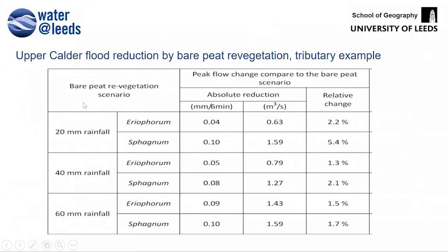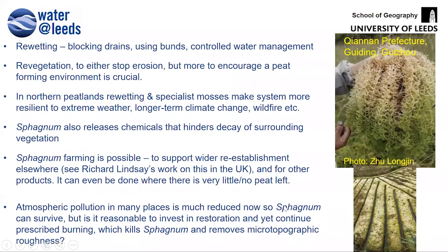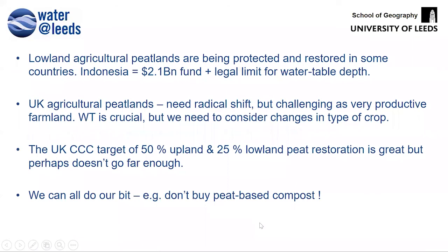We model the effect of dense sphagnum cover on peat surfaces — spreading it on gentle slopes and stream channels really does help reduce flood peaks. In conclusion, we need to be wetting our peatlands using multiple methods, vegetating them to stop erosion and encourage peat formation. In northern peatlands that means specialist mosses — sphagnum farming is possible and being practiced in the UK and on former rice paddy fields in China. Indonesia is investing 2.1 billion dollars in peatland restoration. The UK may not be going far enough with targets for 50 percent upland and 25 percent lowland peat restoration. Peatlands are crucial to delivering net zero — and we can all do our bit: don't buy peat-based compost.